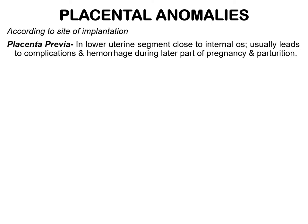Normally, the placenta implants on the upper uterine segment. However, when implantation occurs in the lower part of the uterine segment and the placenta partially or completely covers the internal os of the cervix, it is called placenta previa. This may lead to complications and bleeding during the later part of pregnancy and parturition.